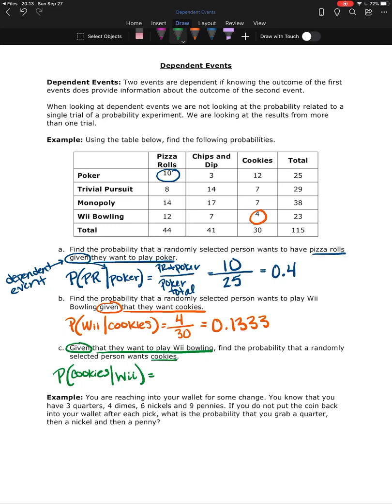So given we look at someone who wanted Wii Bowling, stand up if you want to play Wii Bowling, 23 people stand up. Now stay standing if you also want to eat cookies, or raise your hand if you also want to eat cookies. Four people are going to raise their hand. So of the 23 people that wanted to play Wii Bowling, four of them also voted for cookies, which is 0.1739.